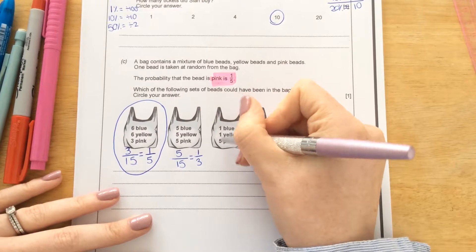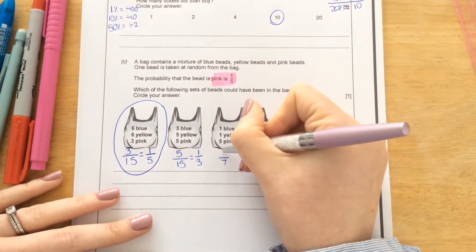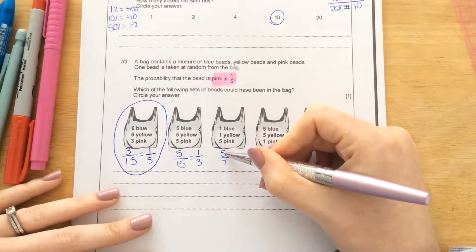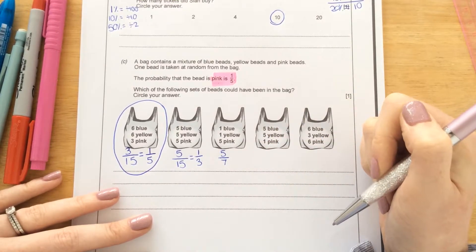This one here, total, would be 7 beads. How many pink ones? 5. So there's not a number that actually goes into both 5 and 7. So that is the simplest that that fraction could possibly be.